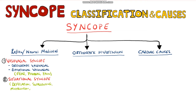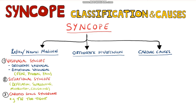Finally, for reflex syncope, we have carotid sinus syndrome, where the carotid baroreceptors react too strongly to detecting increased pressure, leading to an excessive drop in blood pressure and therefore syncope. An example is when people put their ties on too tightly.